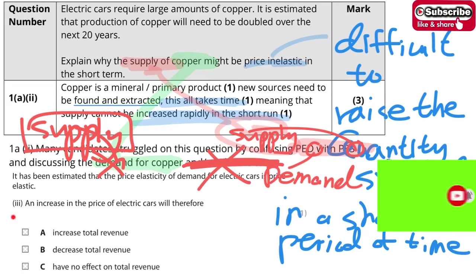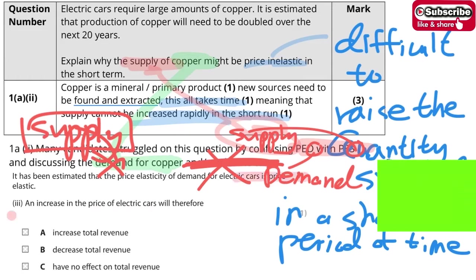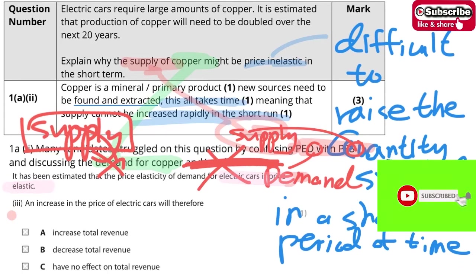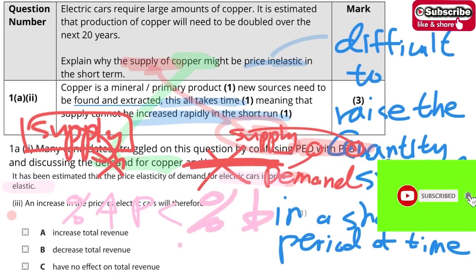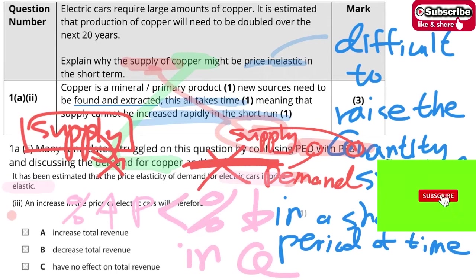Let's move on to part A3. The increase in the price of electric cars would therefore lead to what? This is easy — it depends on the price elasticity. The price elasticity is price elastic, which means the percentage increase in price is smaller than the percentage drop in quantity. So there's a bigger drop in quantity, and the answer goes to B.